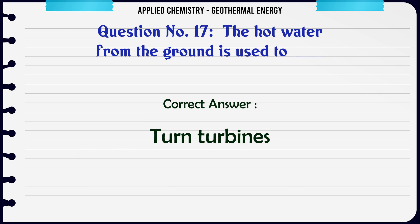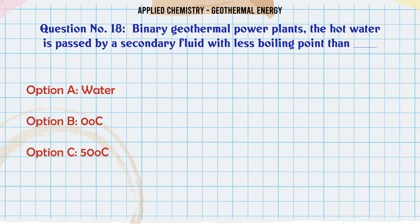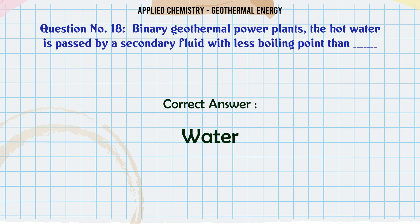In binary geothermal power plants, the hot water is passed by a secondary fluid with a lower boiling point than: A: Water, B: 0°C, C: 50°C, D: 100°C. The correct answer is water.